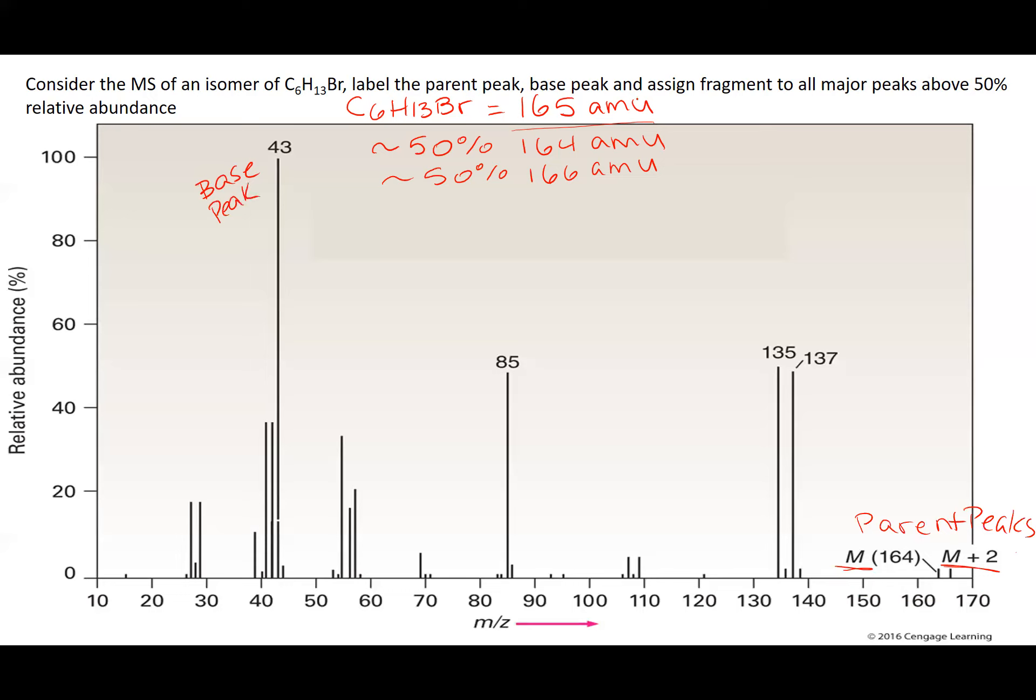Now, assign fragments to all major peaks above 50%. Notice that the base peak doesn't have that M and M plus 2 pattern. Neither does this peak at 85. So that means that this has no bromine. And this has bromine because it has that pattern.